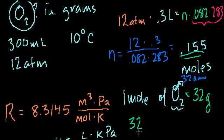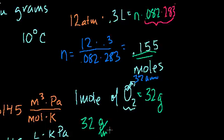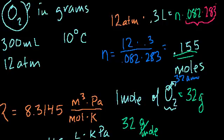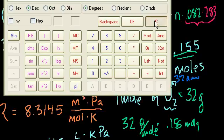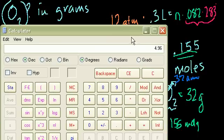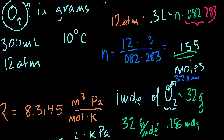So to figure out how many grams we have, we multiply 32 grams per mole times 0.155 moles. And we'll get our answer. So we have 32 times 0.155 equals 4.96 grams, or roughly 5 grams. So we have approximately 5 grams of molecular oxygen.